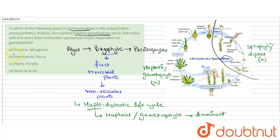If we look at the options, A says Funaria and Sphagnum, so they both belong to the bryophyte. So this could be our correct answer. Then B says Marchantia and Riccia, so both are the examples of bryophyte. So this also could be our answer.